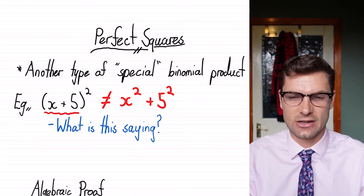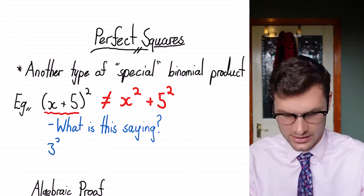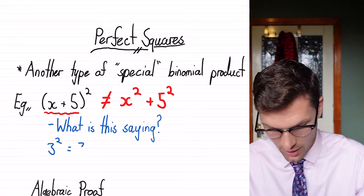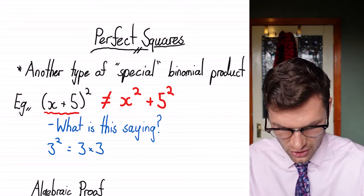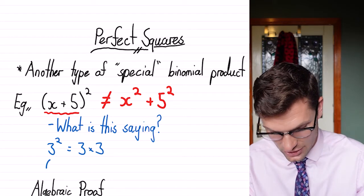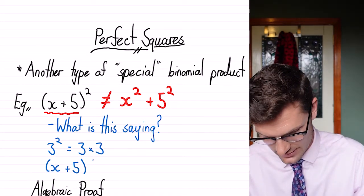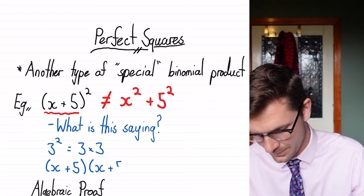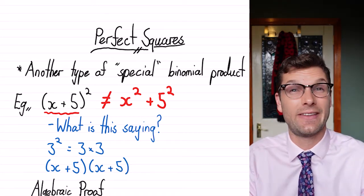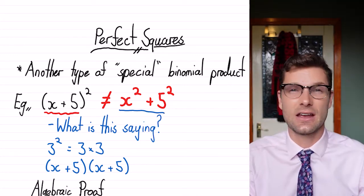We know that something squared means that it's multiplied by itself. 3 squared is the same as 3 times 3, right? So this x plus 5 squared is saying that we have that term, x plus 5, multiplied by itself, x plus 5. So we need to work out what the answer to that is. And just a hint, it is not this original number.